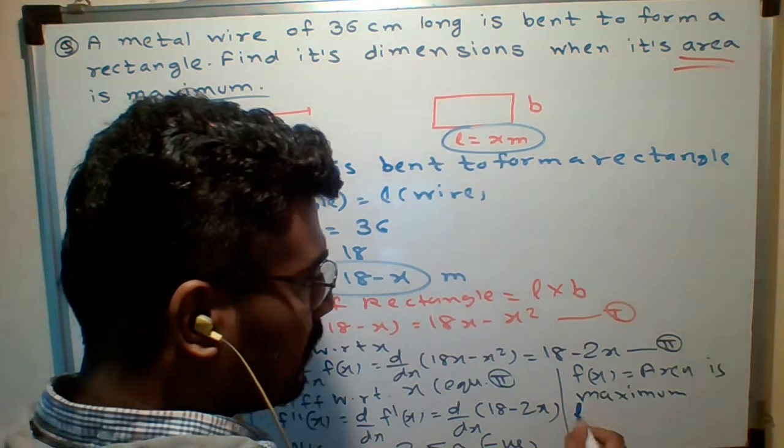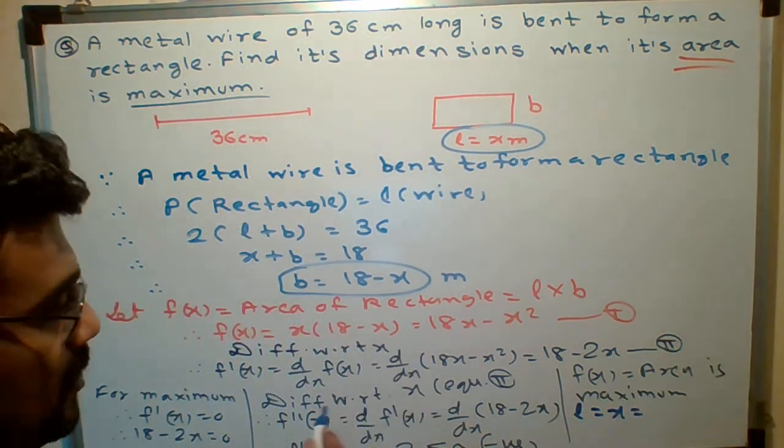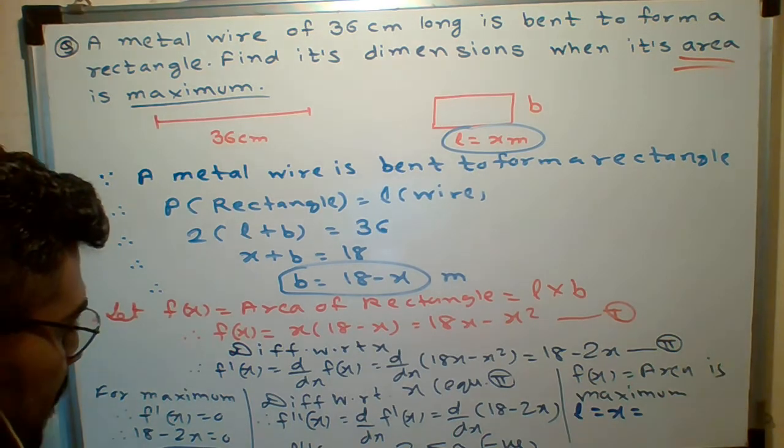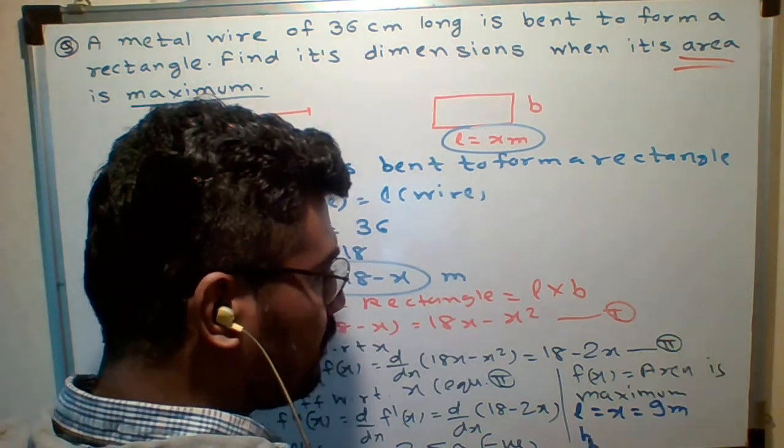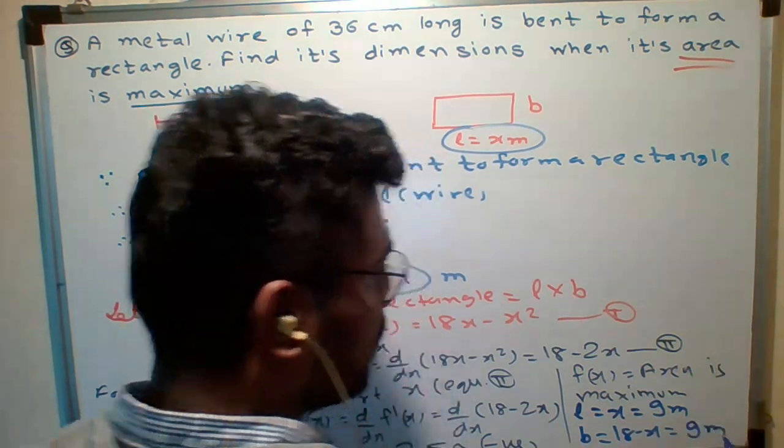Dimension means length. Therefore, length is x. And x value is, how much we got x? X is 9 meter. So, x is 9 meter. What is breadth? 18 minus x. So, 18 minus 9, 9 meter.